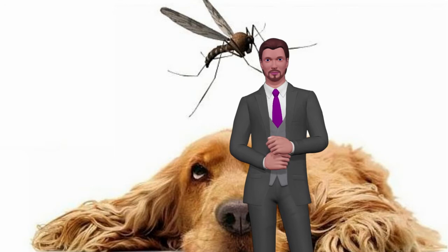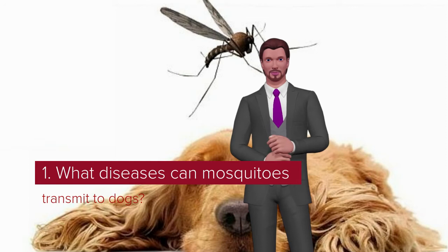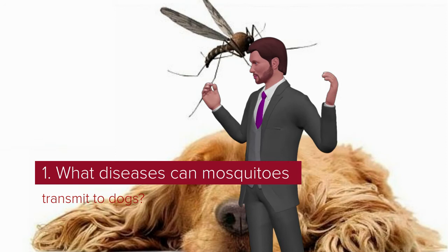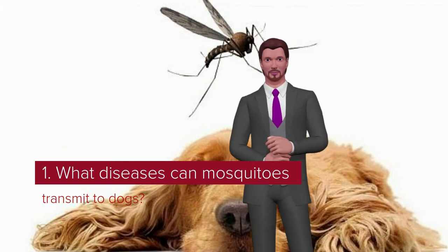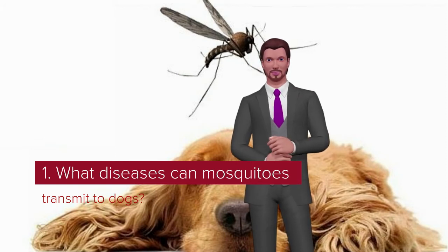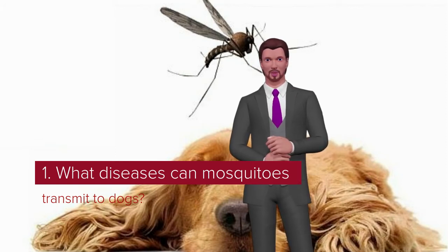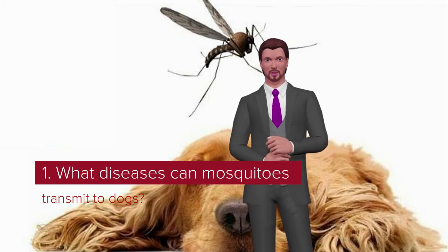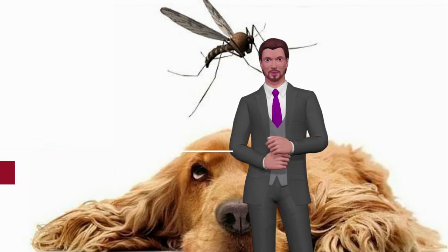What diseases can mosquitoes transmit to dogs? The two diseases most commonly transmitted by mosquitoes to dogs are heartworm, also known as dirofilariasis, and Leishmaniasis. Unfortunately, these pathologies include complex clinical conditions which need to be treated quickly to allow a favorable prognosis. Therefore, it is important to be aware of the first symptoms and quickly go to the vet when you observe them in your best friend.